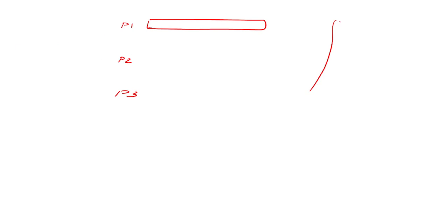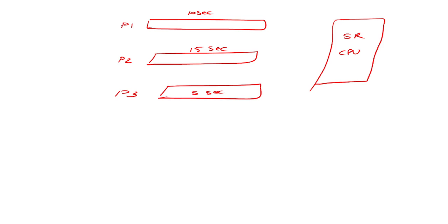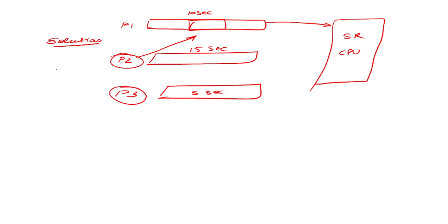For example, consider processes P1, P2, and P3. P1 wants the shared resource — say the CPU — for 10 seconds, P2 for 15 seconds, and P3 for 5 seconds. Whenever P1 is using the shared resource and is in its critical section, P2 and P3 have no access to that critical section at the same point in time. To resolve this, we always need solutions like mutual exclusion, and other methods we will cover in this video.